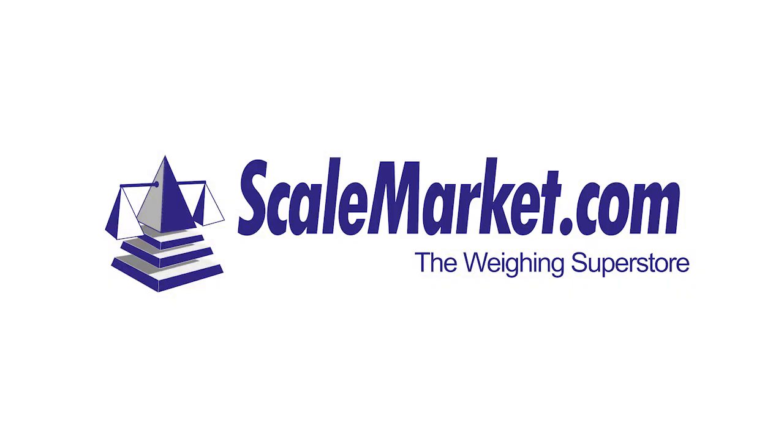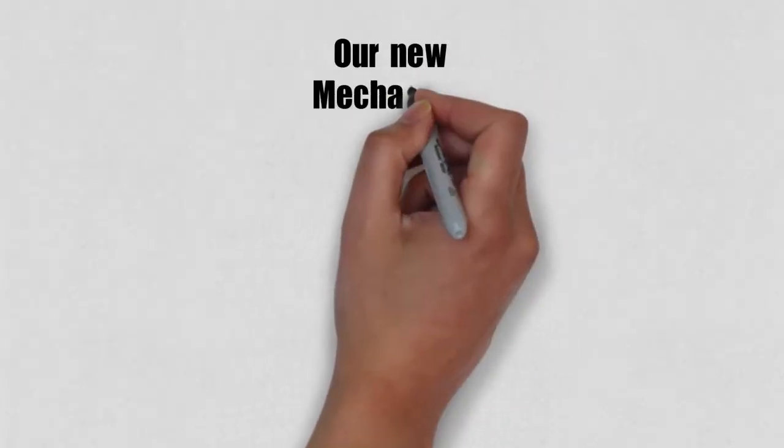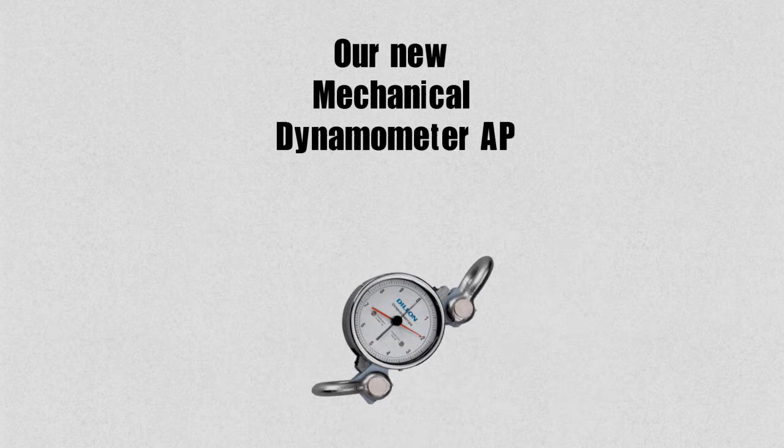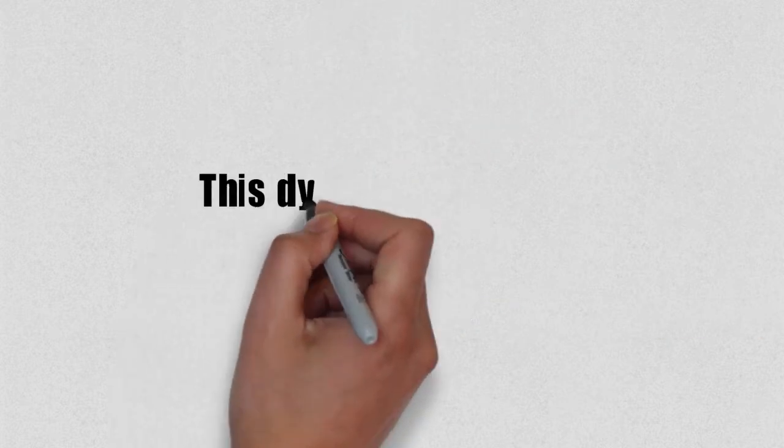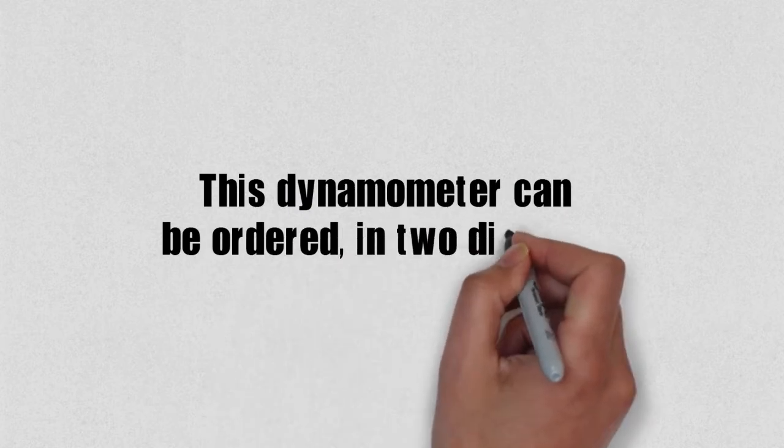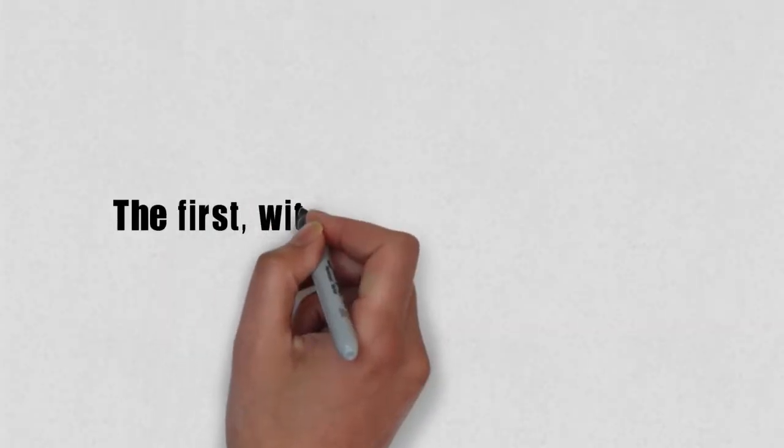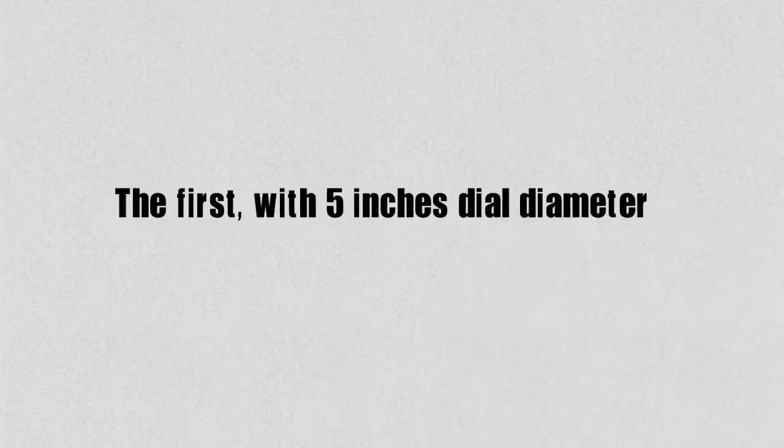ScaleMarket introduces our new mechanical dynamometer, AP model. This dynamometer can be ordered in two dial sizes. The first with 5 inches dial diameter.